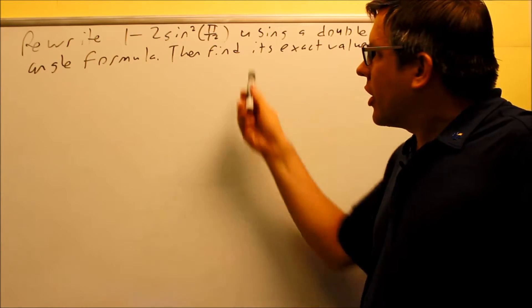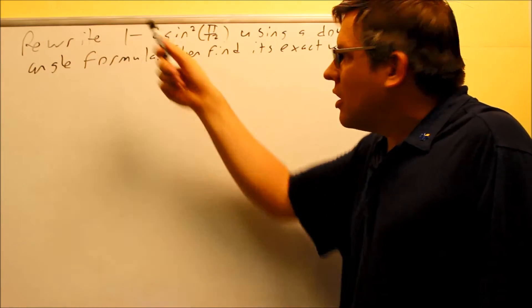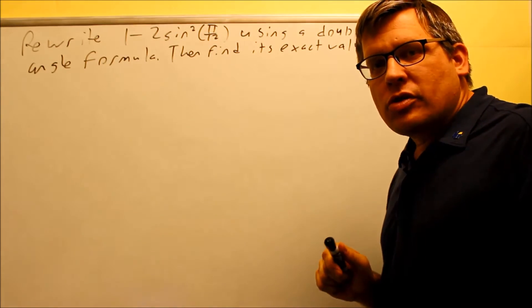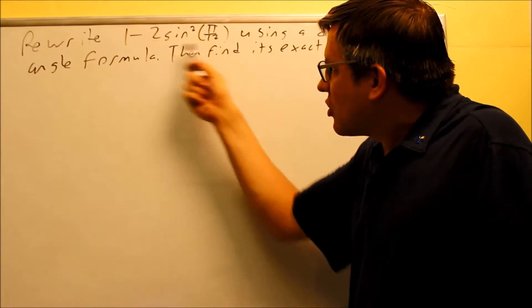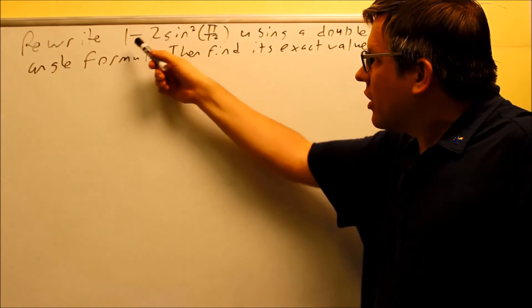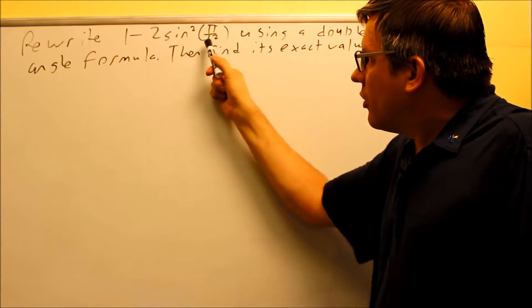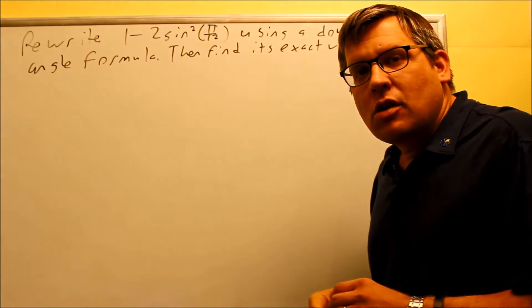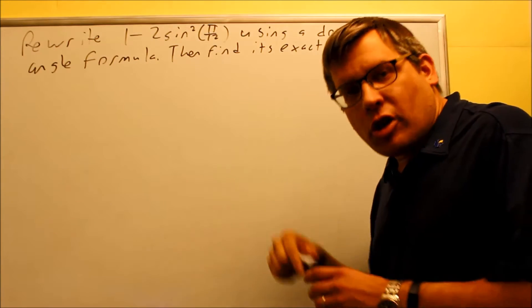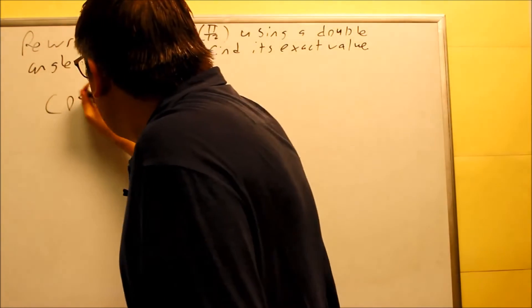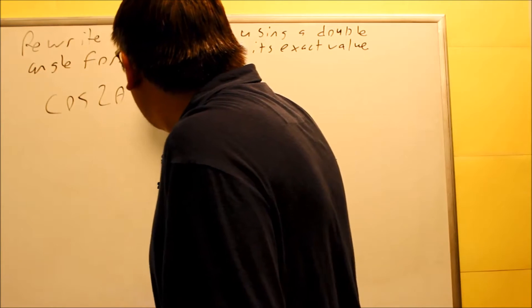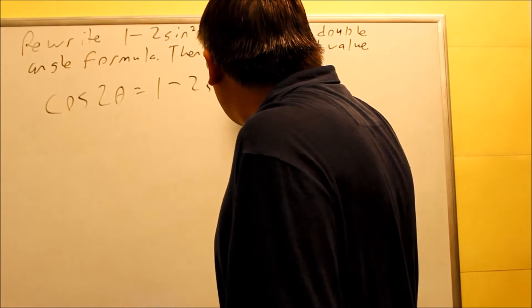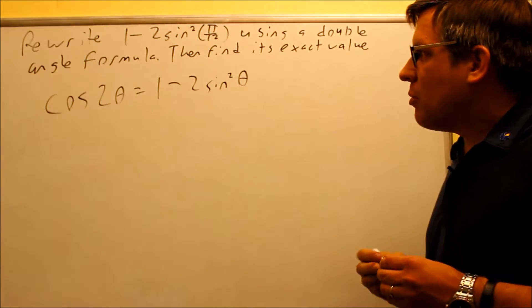What you want to do is look at the form that this is in and take a look at your double angle formulas and see which one this most resembles. If we look at that, there's only going to be one formula that resembles this, and that's the double angle formula for cosine. That's cosine 2θ equals 1 minus 2 sine squared θ. This is actually the one that it resembles.